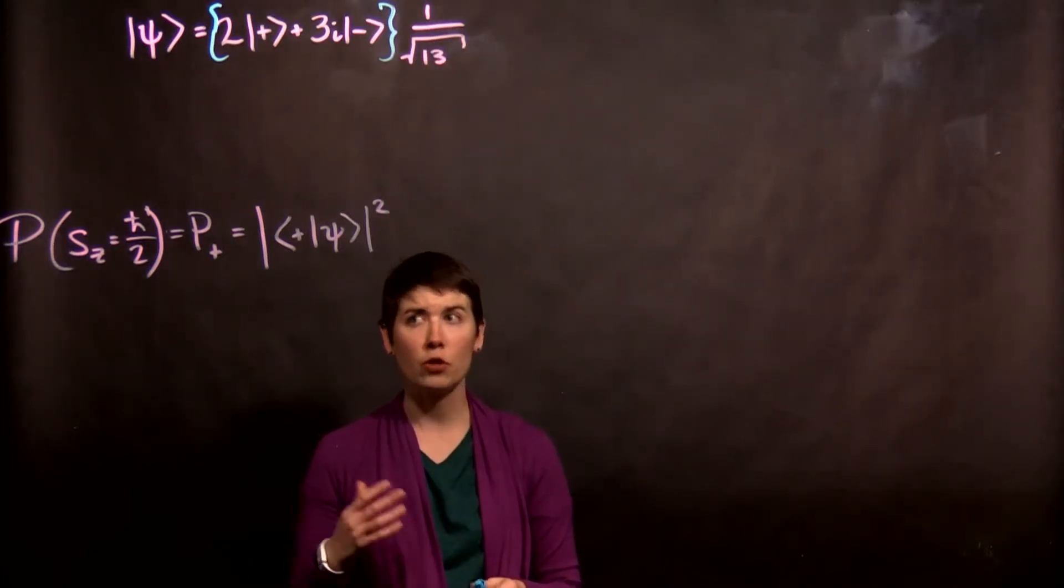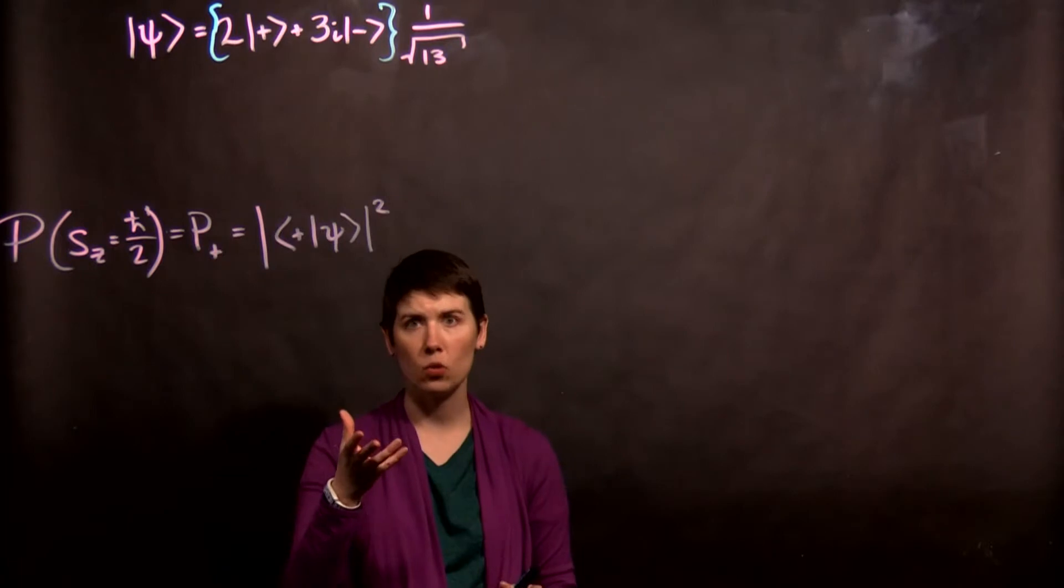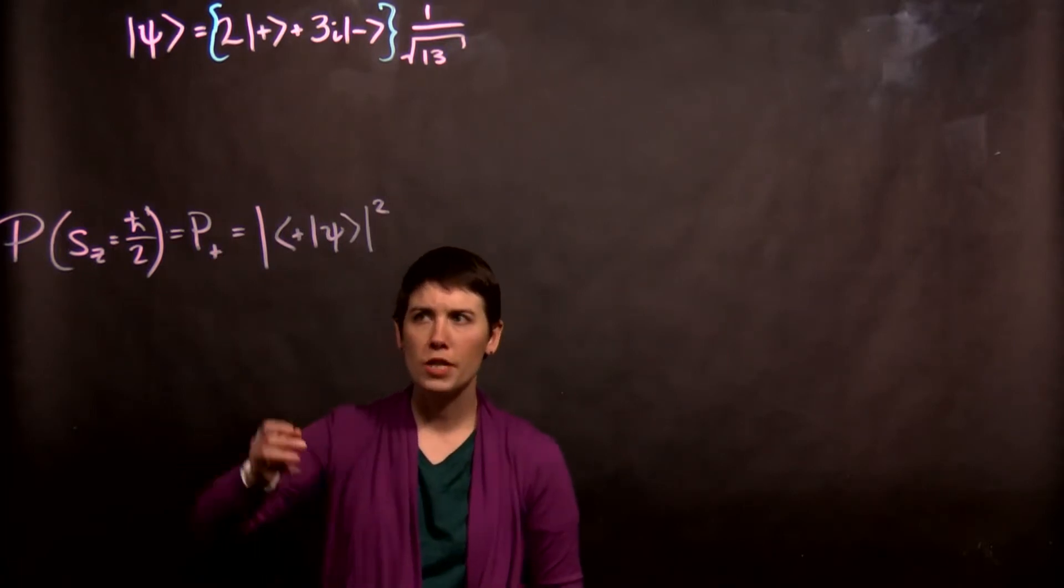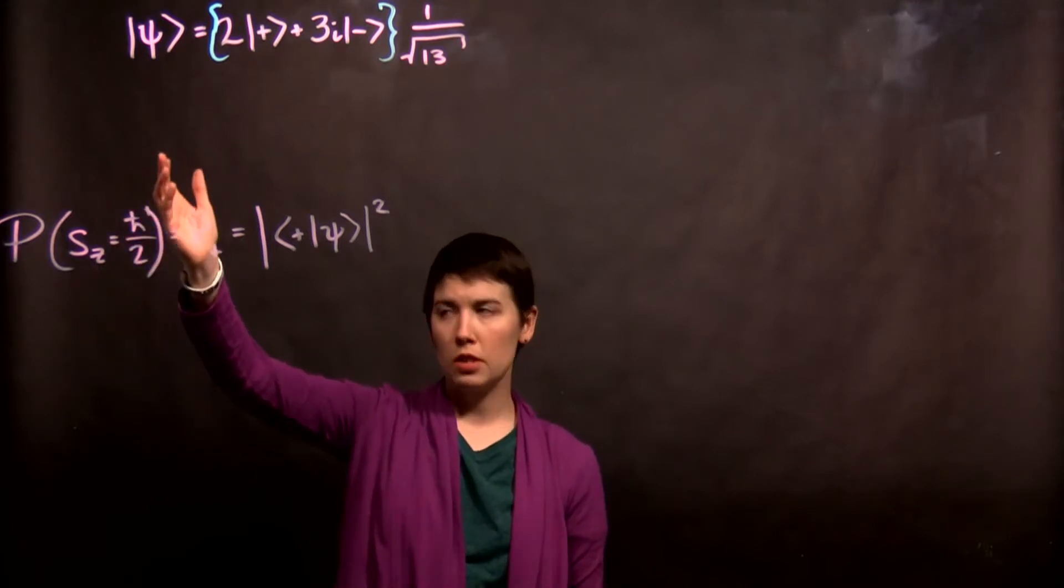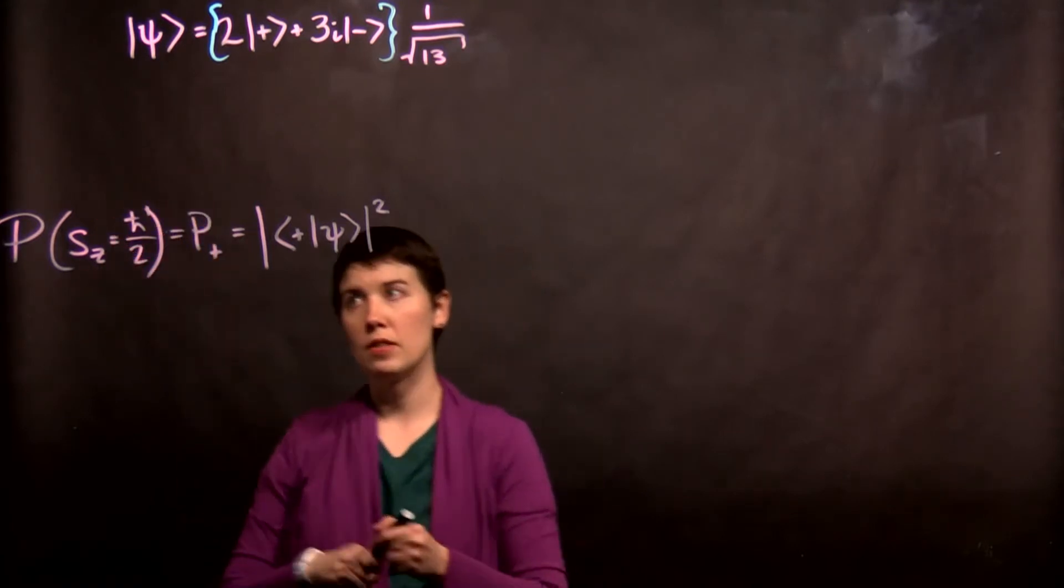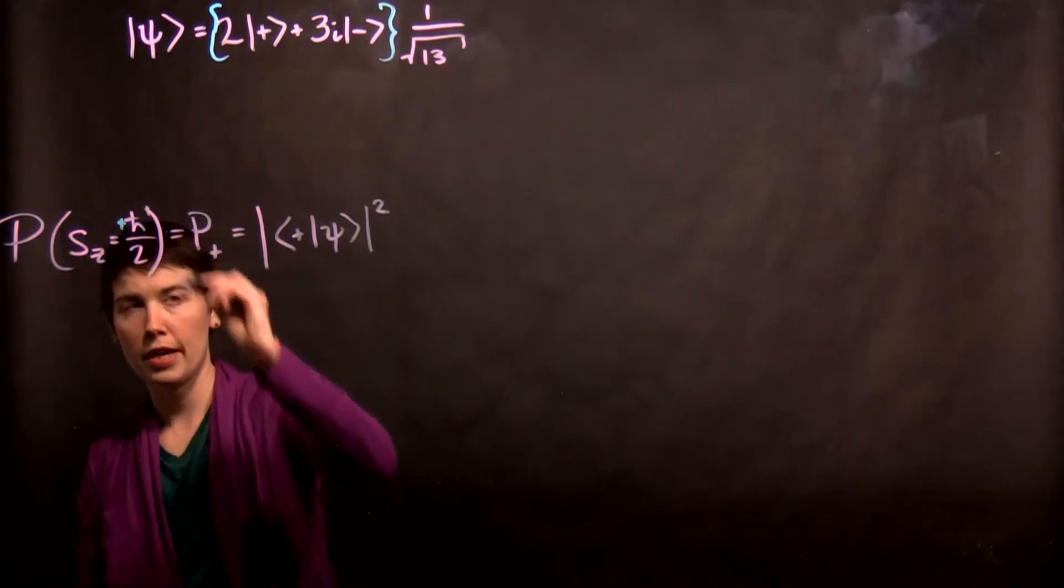Let's look at our probabilities of measuring spin-up and spin-down for this quantum state. One notation is to use P underscore plus for spin-up, and that means measuring the spin in the z-basis to be positive h-bar over 2.